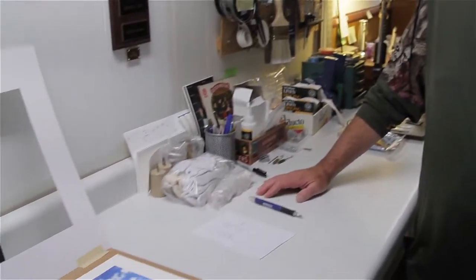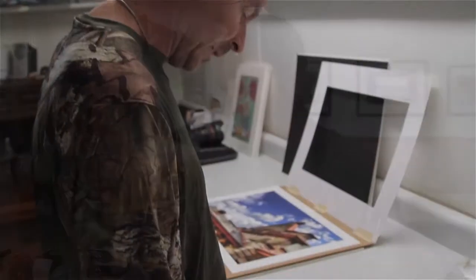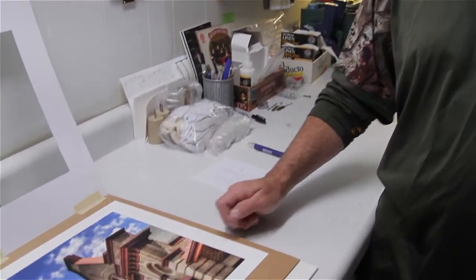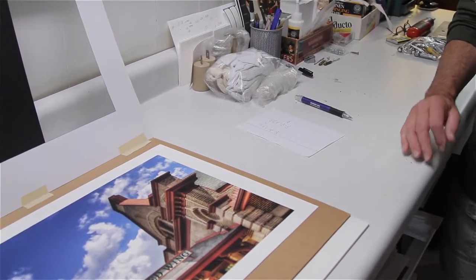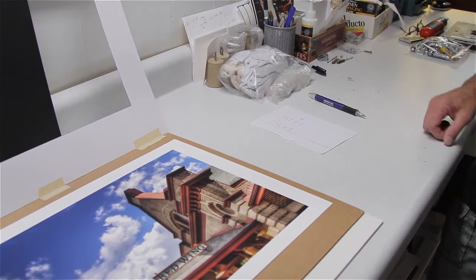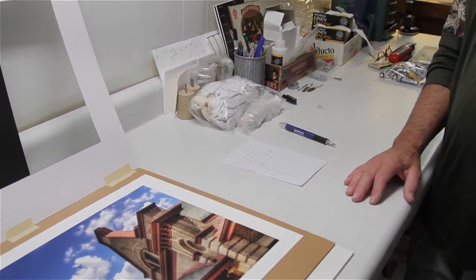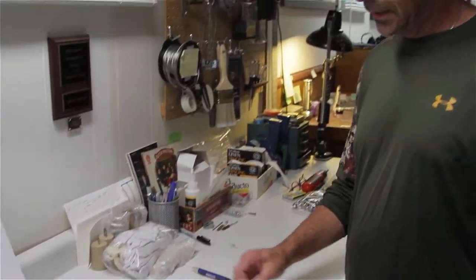First thing was a lot of math - that's the hardest part. We're figuring out the image area versus the overall mat size. We want about an eighth of an inch overlap on the image, an eighth inch bleed on all sides. Once we've determined what our cuts need to be...